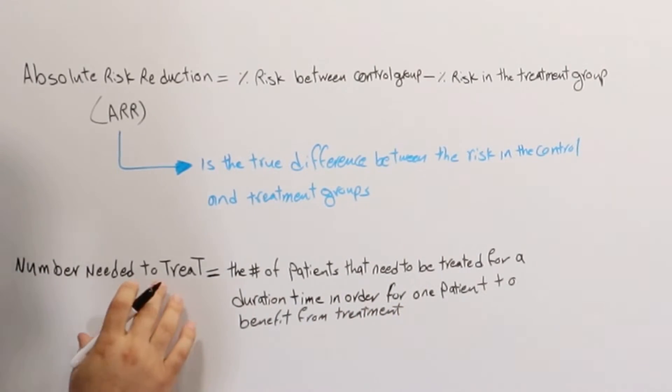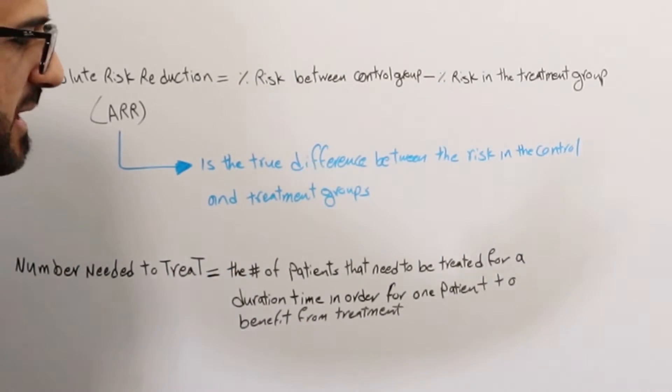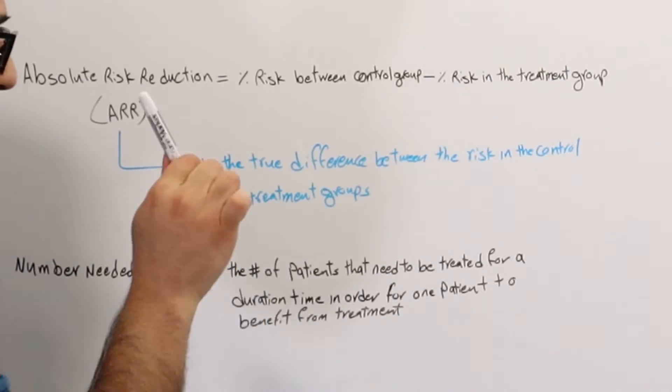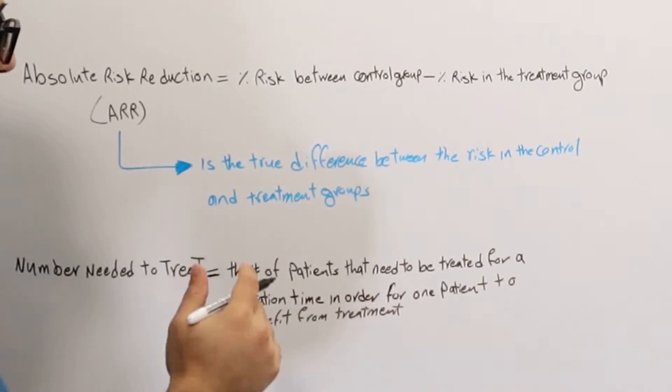So that's what number needed to treat is. How many people do I need to treat? How many patients do I need to treat in order for one to benefit from this new medication?